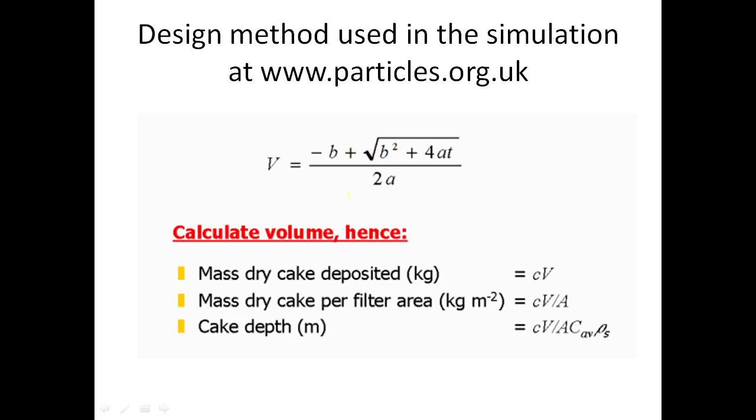Once we have the volume of filtrate, then all the other interesting design parameters drop immediately out. Because if we know the dry cake mass per unit volume of filtrate, then we can multiply the dry cake mass per unit volume of filtrate times by the volume of filtrate to arrive at the dry cake mass that's been produced. So we'd be using the final value for C, little c, if we've been allowed for compression. We can also calculate the dry cake mass per unit filter area, which is what's here. That follows again, knowing what V is, multiplying by C, dividing by area.